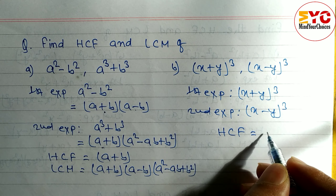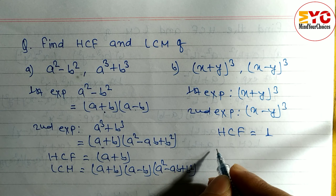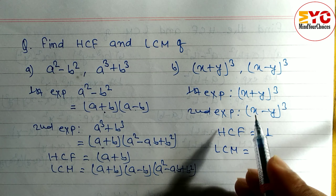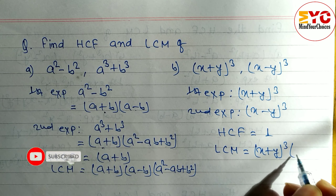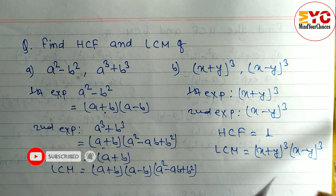The GCF is (a+b), because (a+b) is common to both expressions. GCF means we take the common element, which is (a+b). For the LCM, we write the common element (a+b), then the remaining factor from the first expression (a-b), and the remaining factor from the second expression (a² - ab + b²). That is the LCM.